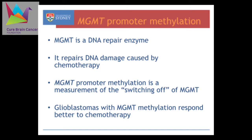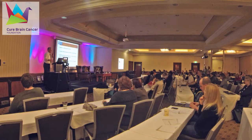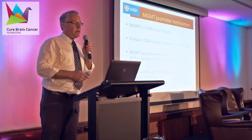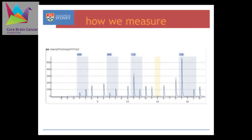The last thing I'll touch on is MGMT promoter methylation. MGMT is a DNA repair enzyme — it's very helpful for normal cells because it repairs damage to DNA. The problem in tumour cells is that chemotherapy damages DNA, and you want it to do that because you want to kill the tumour cells. But if they still have MGMT then they can partly repair the damage done by the chemotherapy, making it less effective. MGMT promoter methylation is a measurement of the switching off of MGMT. Glioblastomas with MGMT methylation have the MGMT enzyme switched off, so they can't repair their DNA damage as well, meaning the chemotherapy tends to work better. We use pyrosequencing, a relatively specialised technology, to assess that.